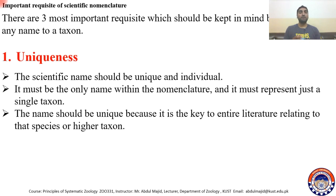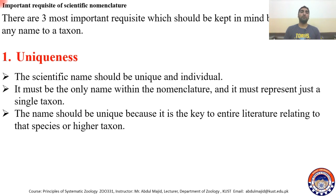Canis familiaris — the specific name familiaris must be used only and only for dog, so that when you search the literature regarding the dog, it guides you straight towards the history or classification of the dog from species level to kingdom level or domain level.